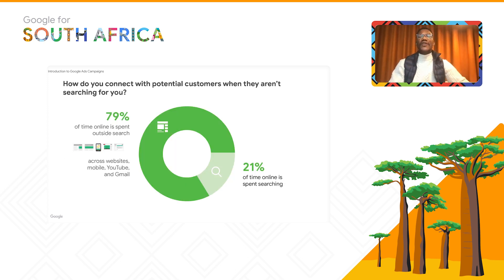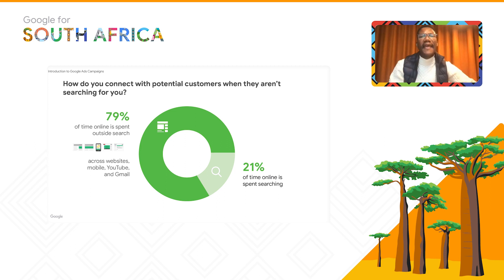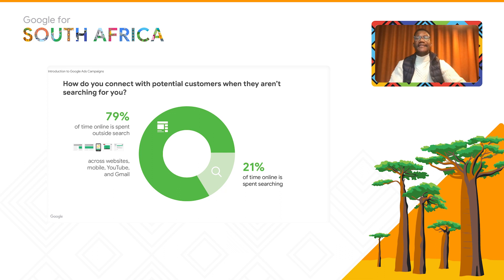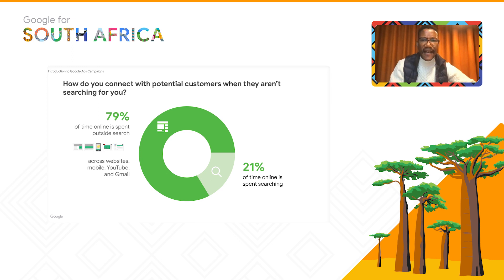Around 21% of time spent online is spent on search, while around 79% is spent outside search. So if I was looking for coffee, I'd search for nearby coffee shops, Google would show me the relevant ad, but I'd spend around 80% of my time outside the search network — looking at display ads, comparing prices, going on YouTube, learning about coffee varieties, visiting sites to compare. This is why you want to be present on the display platform.